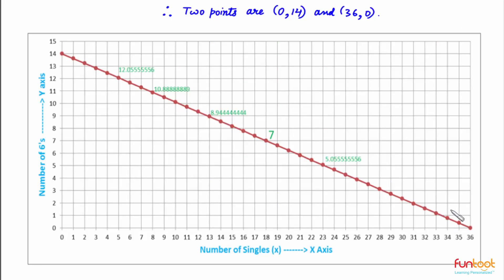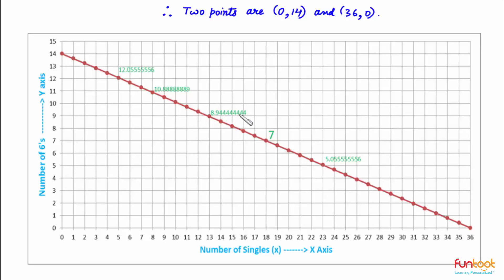Therefore, the two points are (0, 14) and (36, 0). This is the graph obtained using these two points. Along the x-axis we have the number of singles, and along the y-axis we have the number of sixes. In green, we have shown values of sixes when the value of sixes is very near to whole number values.